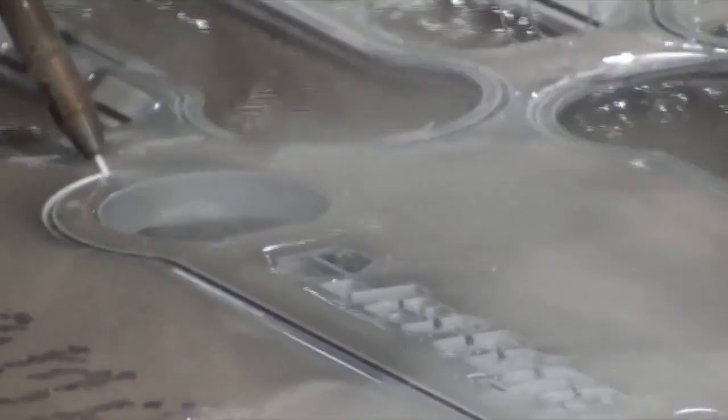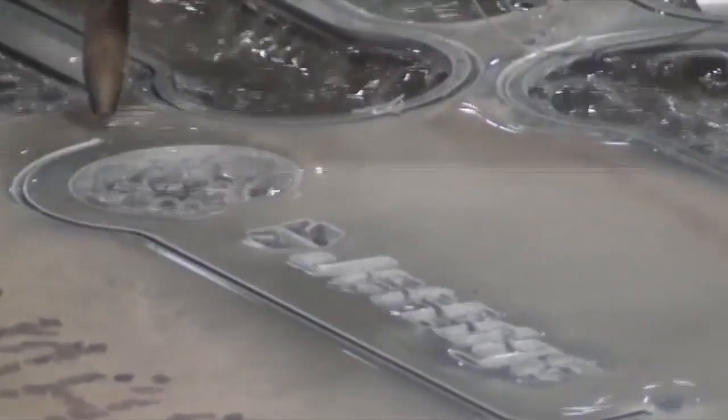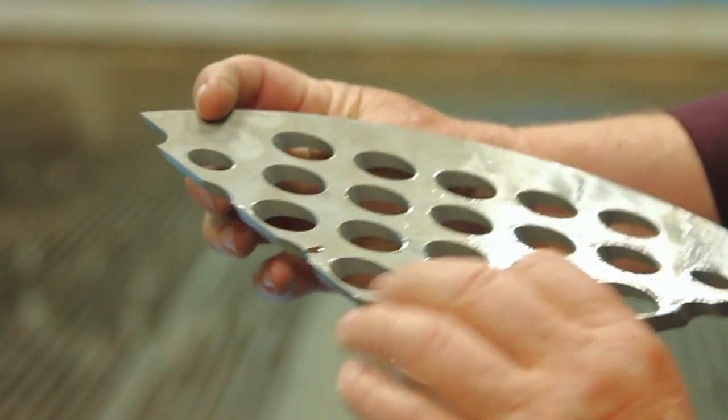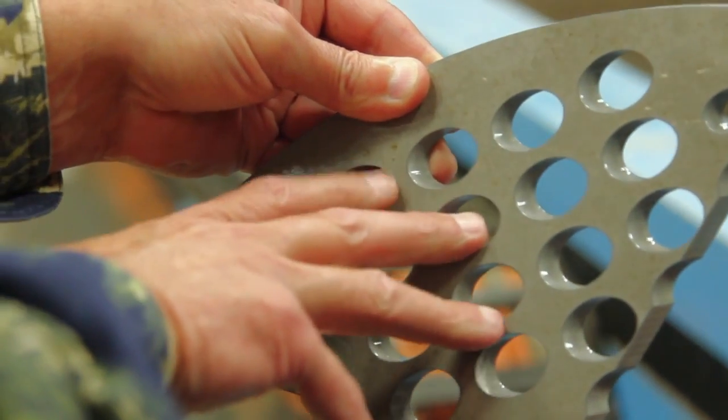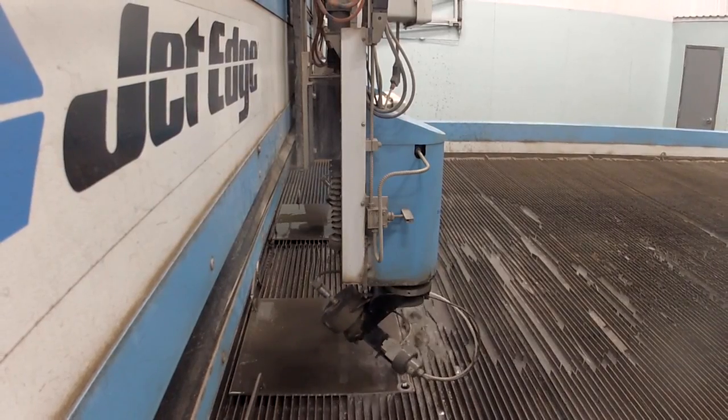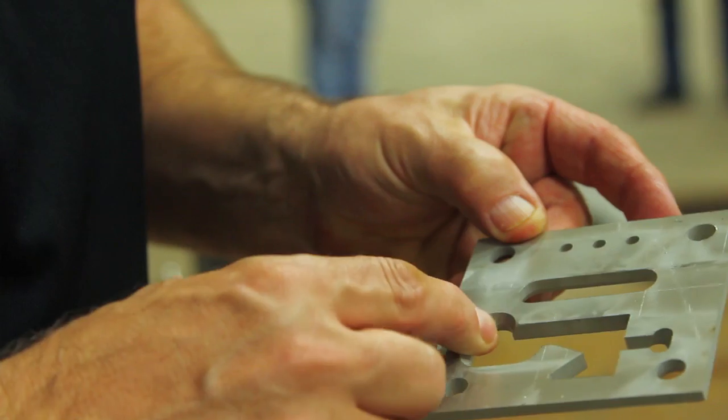We can bevel both top and bottom sides of the material at a maximum of 50 degrees. It also allows us to chamfer holes on the top and the bottom of the material. The water jet also eliminates the heat affected zone that's caused by plasma cutting or laser cutting.